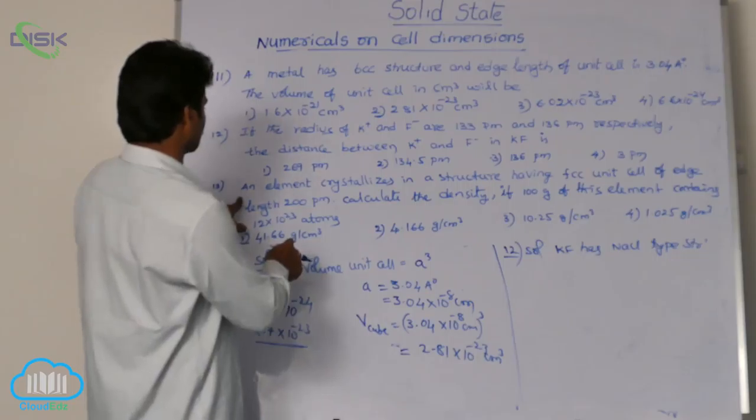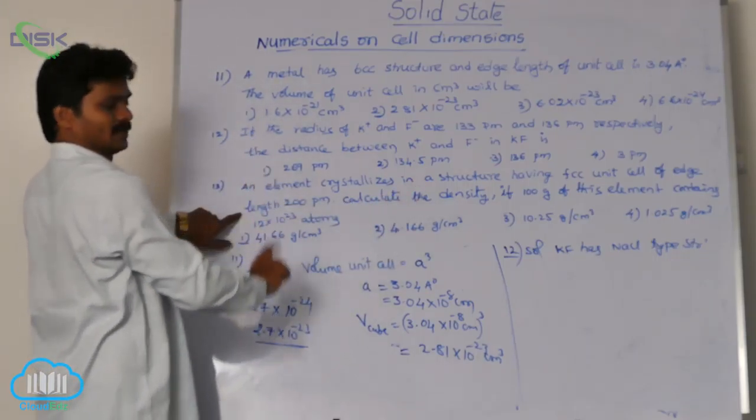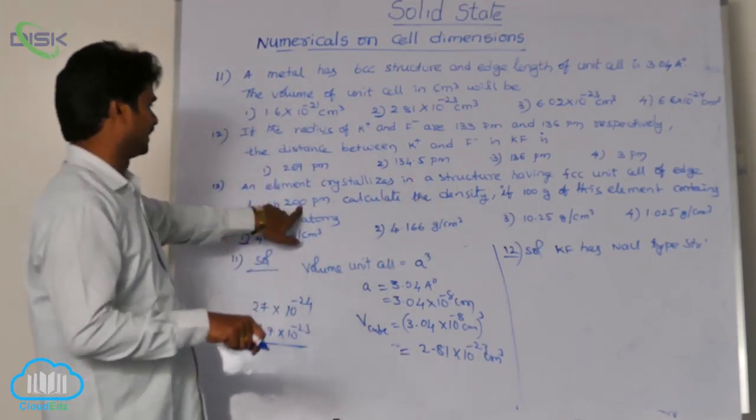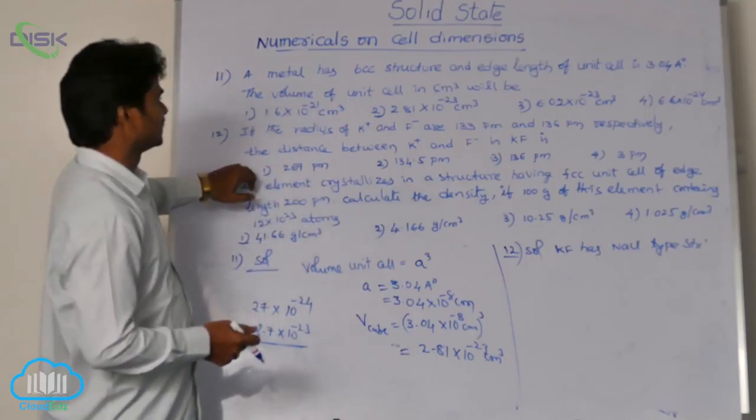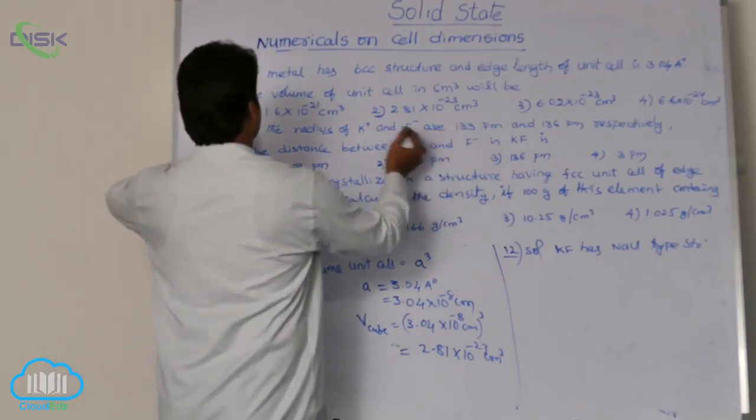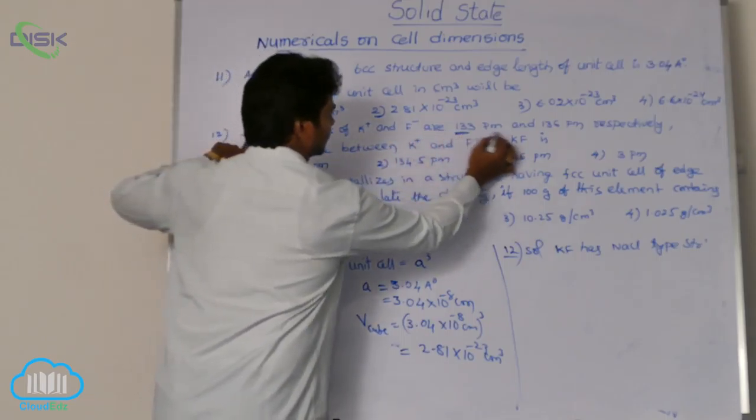You know, here asking for which one? Here, edge length 200 picometers, A is given. Asking edge length A is given, what is that? See if the radius, sorry. Radius are given here.